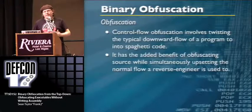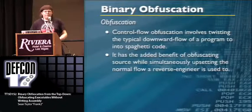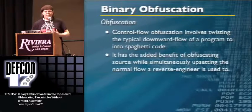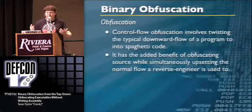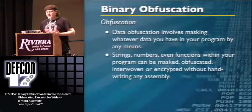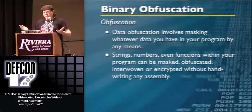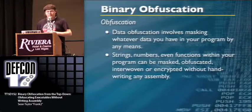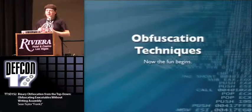Control flow obfuscation means twisting the typical downward flow of your program into a nest of spaghetti code. Employing this in high-level code has the cool benefit of completely messing with the code and making it illegible. Data obfuscation is essentially masking whatever data you have — strings, numbers, even functions — and doing whatever you want with it if you can figure out how to tweak it and rebuild it at runtime.